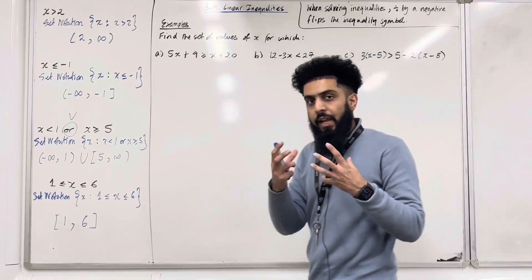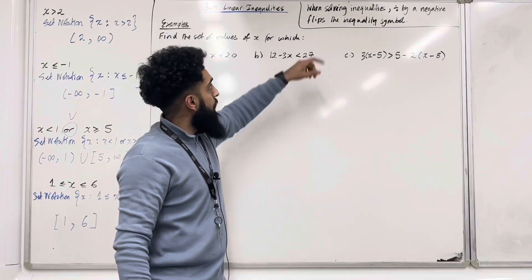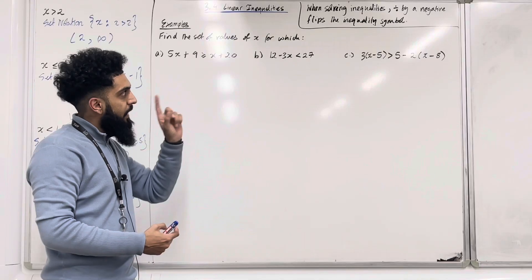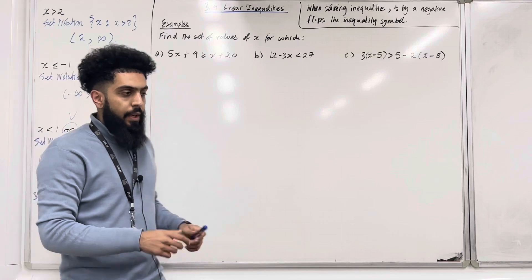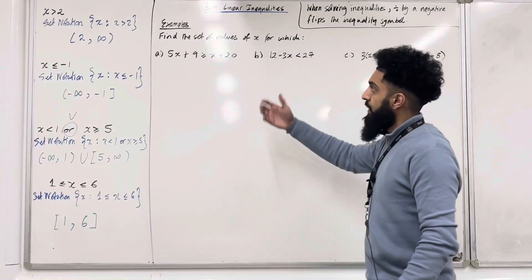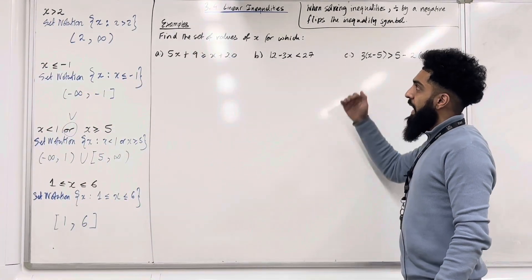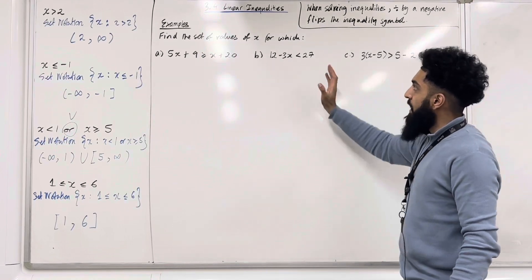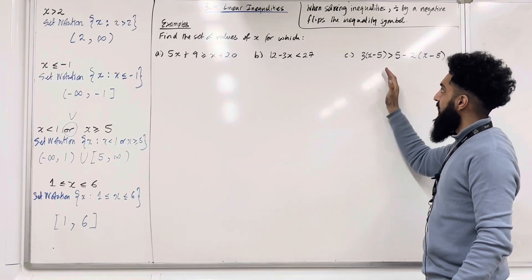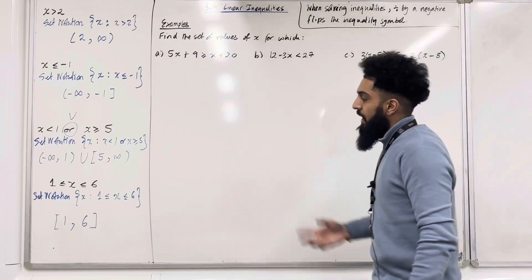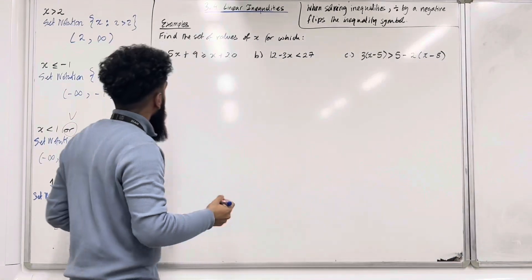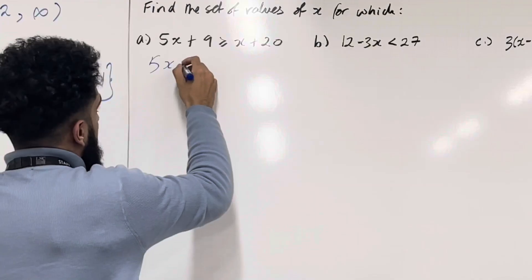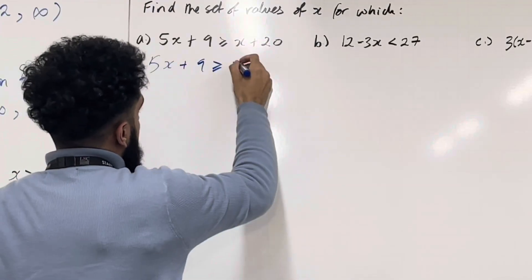One important thing to note: when solving inequalities, dividing by a negative flips the inequality symbol — that is very important. Now let's look at some examples. Find the set of values of X for which parts A, B, and C are satisfied. For part A, we have: 5X plus 9 is greater than or equal to X plus 20.